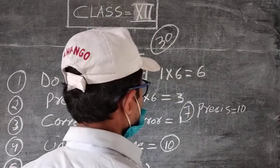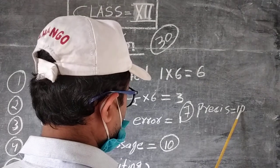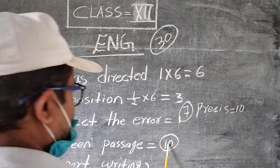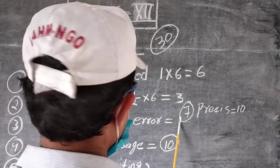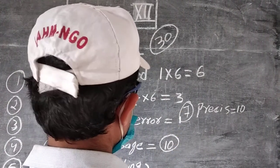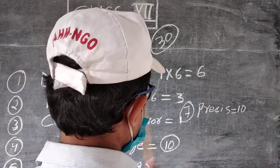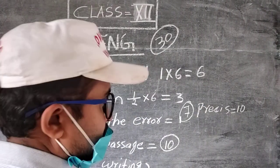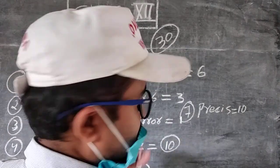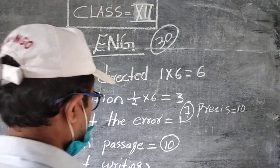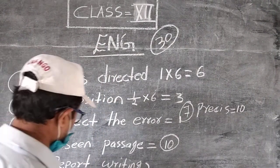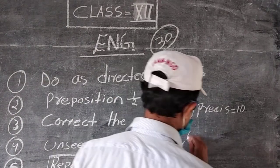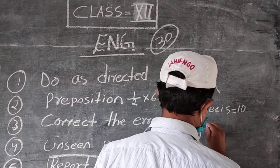And last we have precise writing, number seven. So let's count the marks now: 10 marks for precise writing, 10 marks for unseen passages, correct the error 1 mark, prepositions 3 marks, do as directed 6 marks, and report 10 marks or if you are choosing the letter, that will be 10 marks. Don't choose both, any one you have to choose.